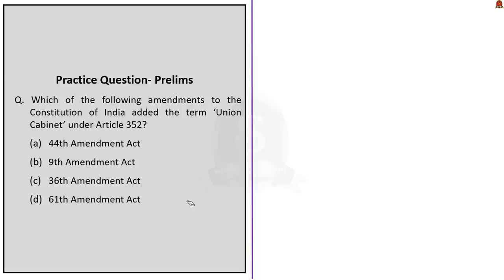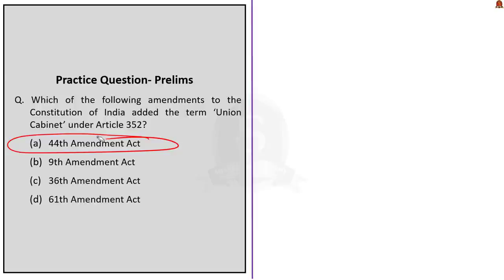Moving to the second question: Which of the following amendments to the Constitution of India added the term 'Union Cabinet' under Article 352? The options are: Option A — 44th Amendment Act, Option B — 9th Amendment Act, Option C — 36th Amendment Act, Option D — 61st Amendment Act. This is a direct factual-based question. As we discussed earlier, the answer is Option A, the 44th Constitutional Amendment Act. The 9th Amendment Act gave effect to the transfer of certain territories to Pakistan. The 36th Amendment Act deals with the state of Sikkim which was given statehood. The 61st Amendment Act deals with lowering the voting age for elections to the Lok Sabha and to the legislative assemblies of states. The answer is Option A — 44th Amendment Act.